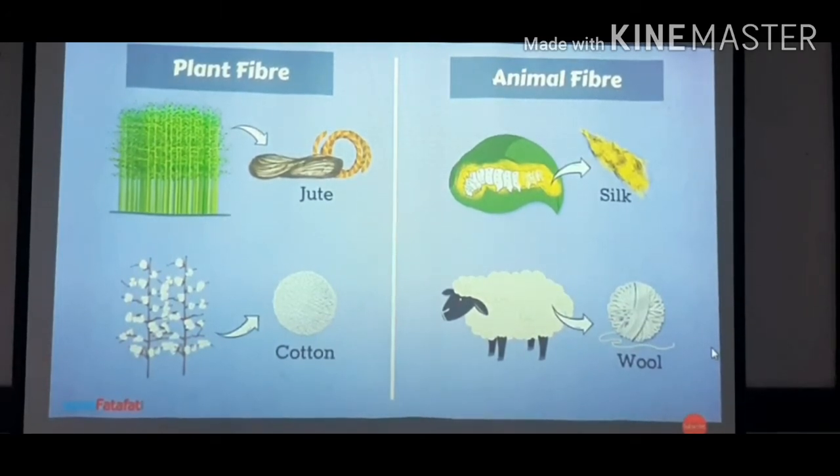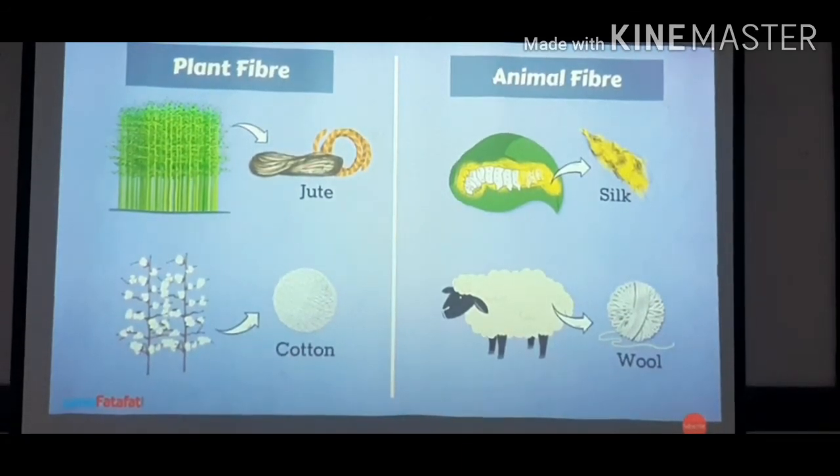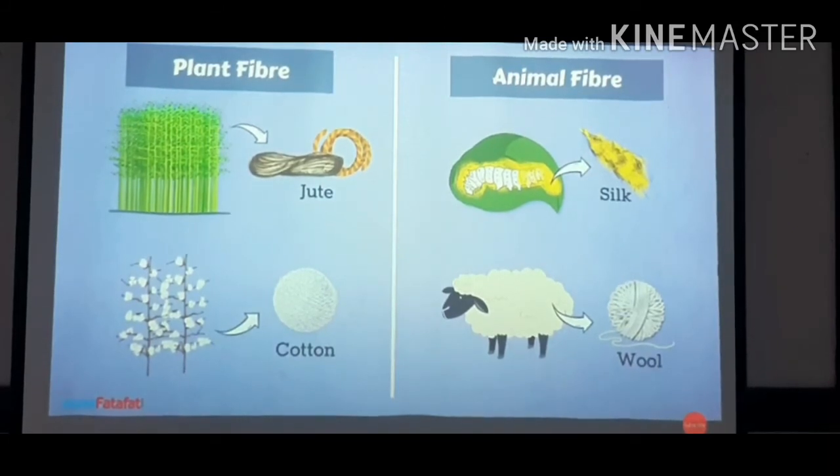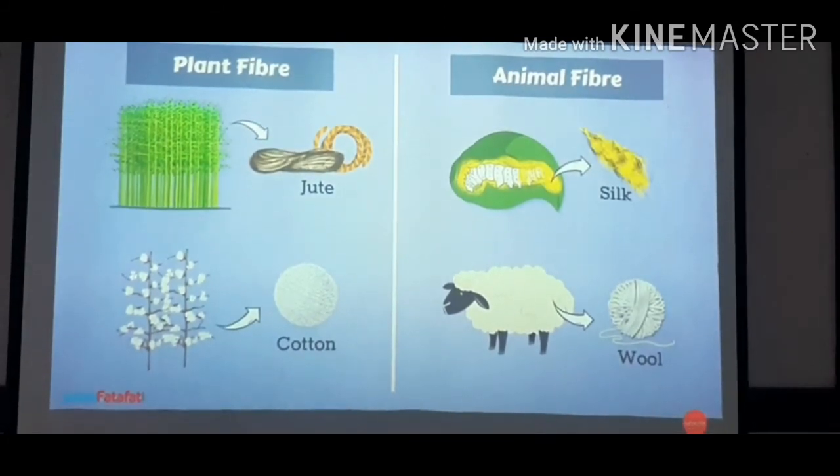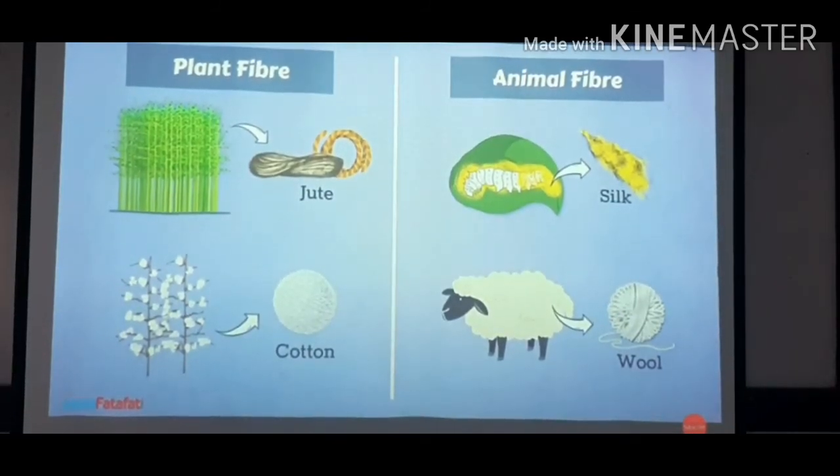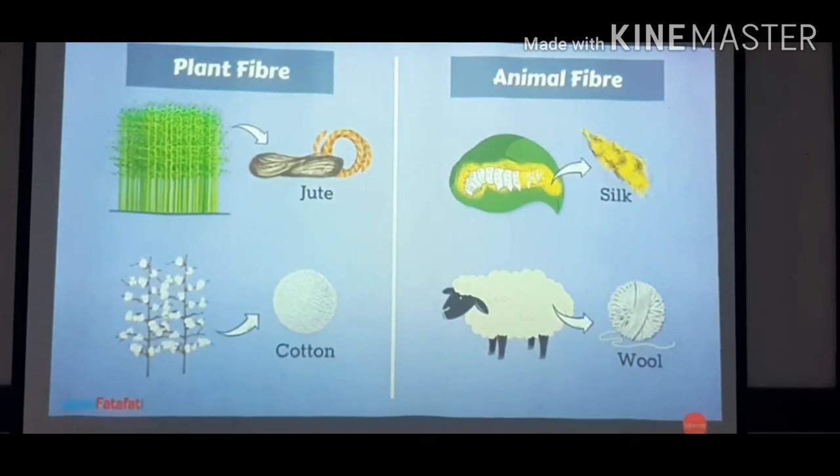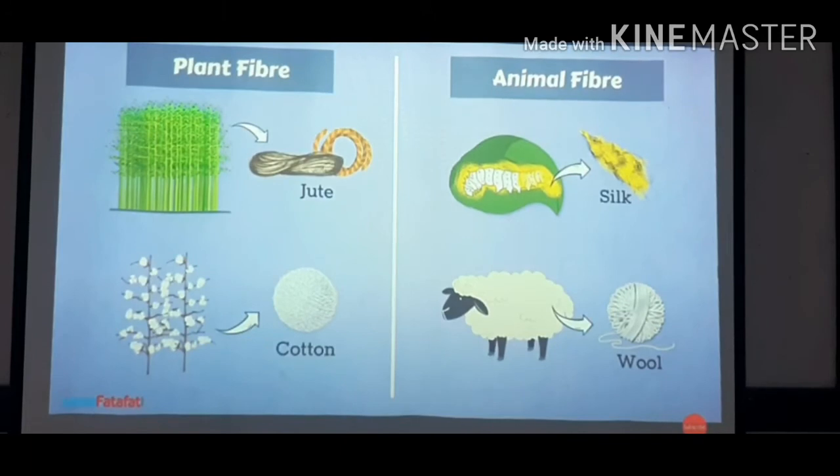So jute and cotton are plant fibers, and silk and wool are animal fibers. These are called natural fibers. Wool is obtained from fleece of sheep or goat. It is also obtained from the hair of rabbits, yak and camels. Silk fiber is drawn from the cocoons of silkworms.